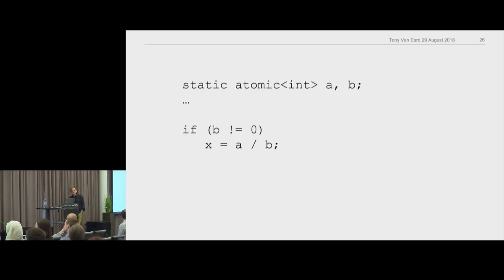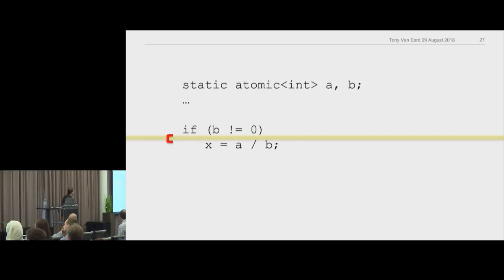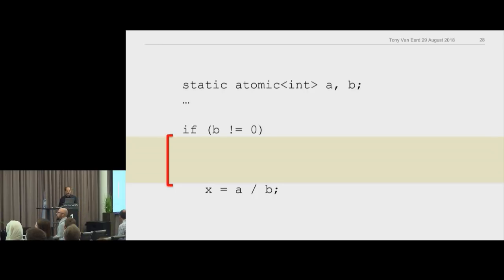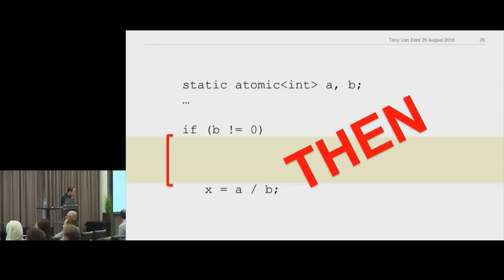The obvious answer is to make it an atomic. Now I can read and write from two threads at the same time, but we still have a problem: B is not zero, but then there's a gap between the if statement and the next line of code where another thread can come in and suddenly B is zero. So this if statement does nothing for you in a multi-threaded environment — that little gap is much bigger than it looks, like a huge gap you can drive a truck through.